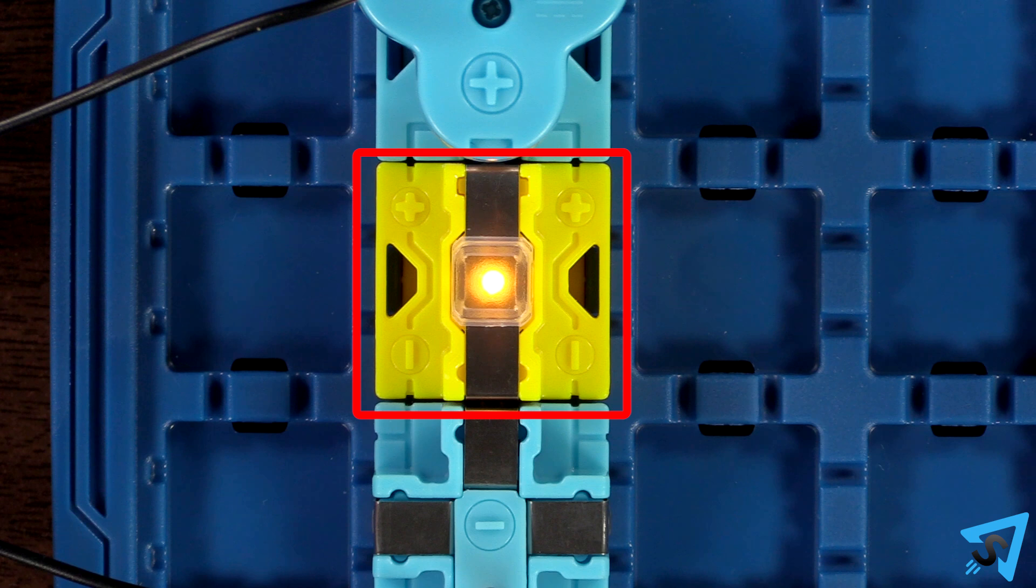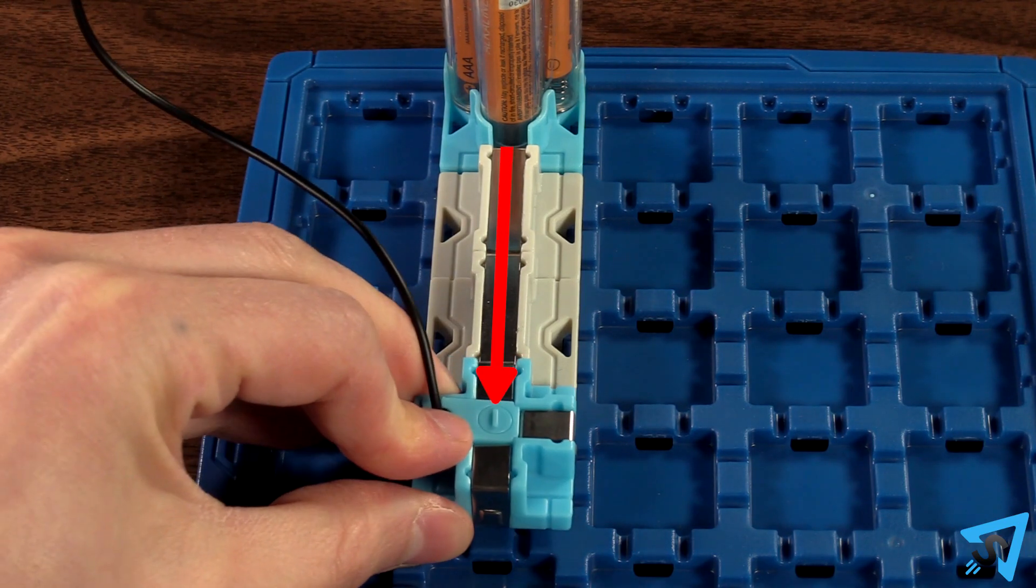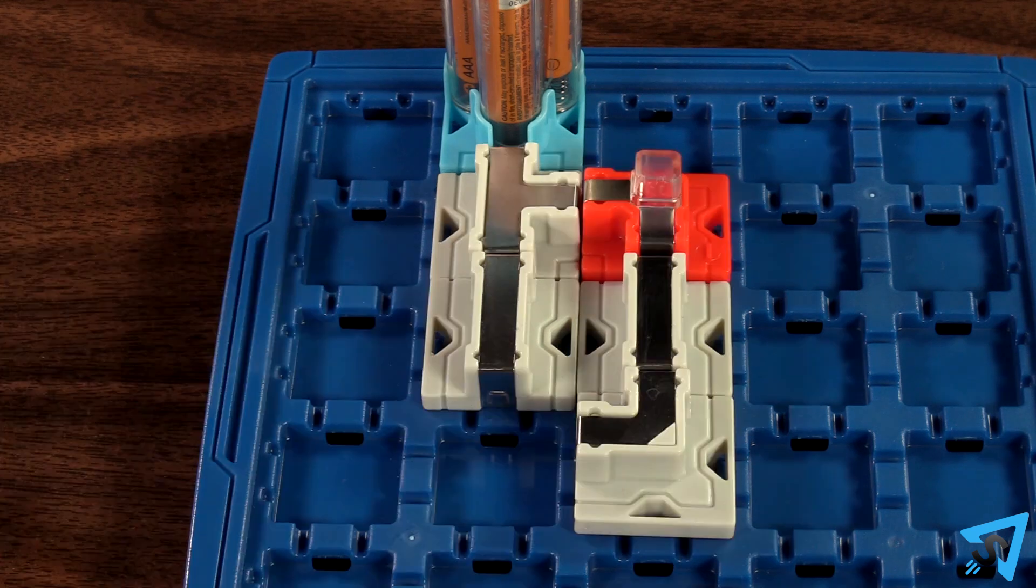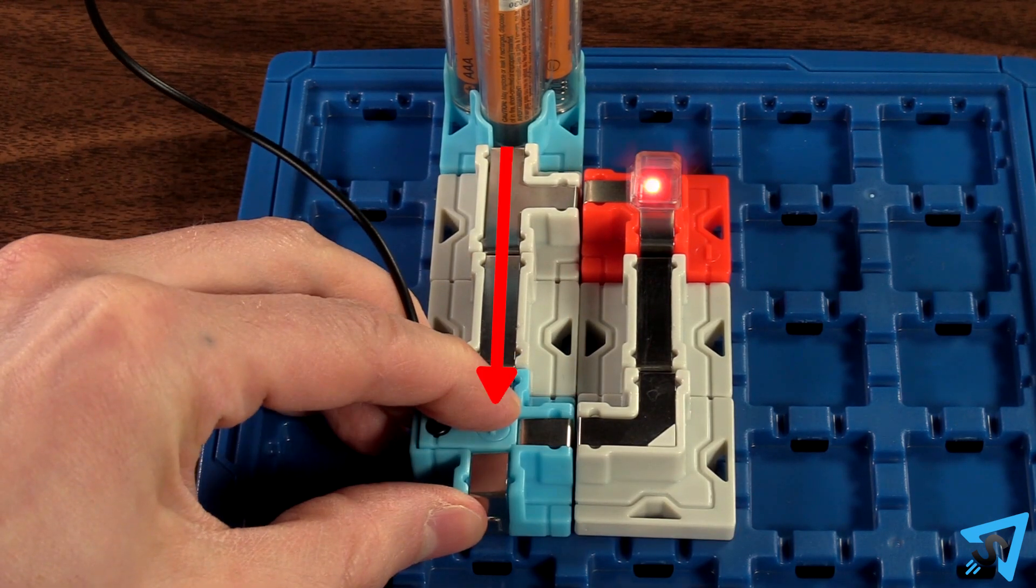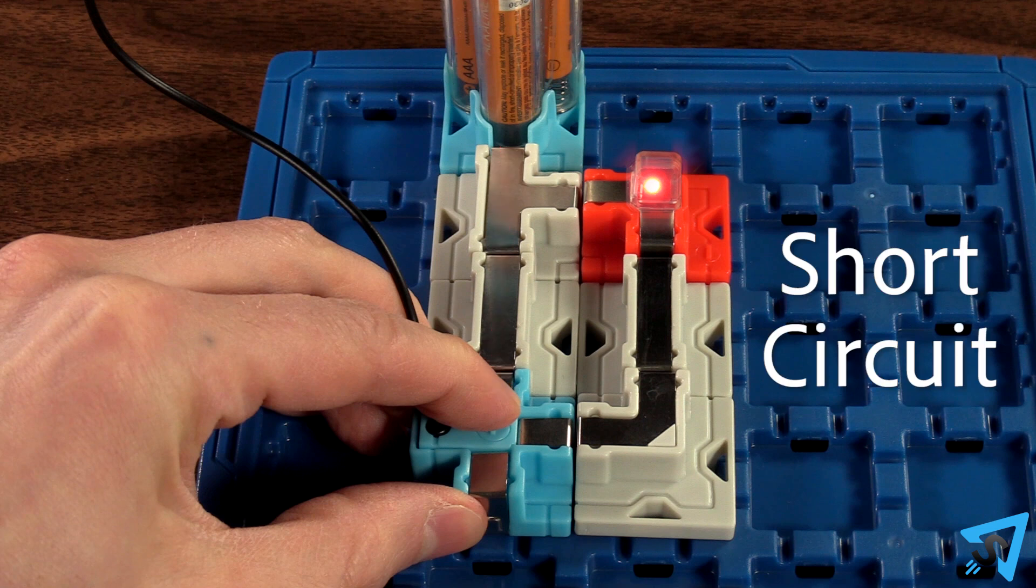And there must be at least one beacon in between. If you run the current directly from start to end without a beacon, or if you have a parallel circuit that lights up a beacon but also bypasses the beacon, then that is called a short circuit and should be avoided.